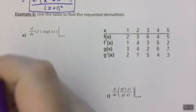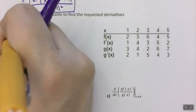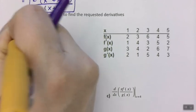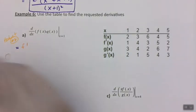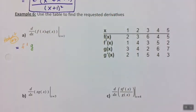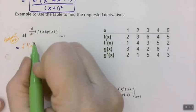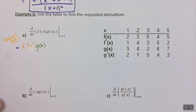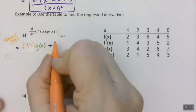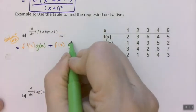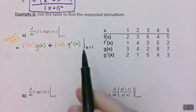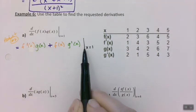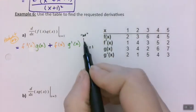According to the product rule — rule number 7 — we would take f prime of x times g of x, plus f of x times g prime of x. But I want it at x equals 1. This little notation — this little line — means I'm going to substitute 1 into my values. It means at x equals 1.